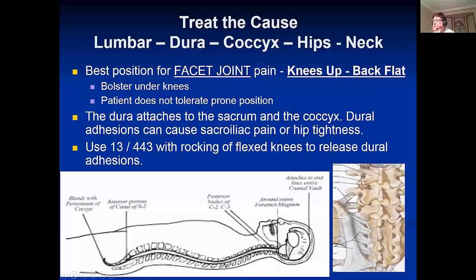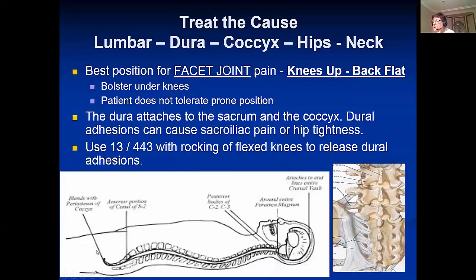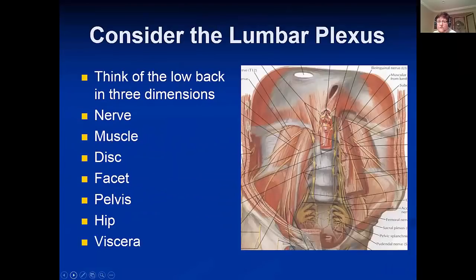Lumbar dura, coccyx, hips, and neck: the dura attaches to the coccyx, goes all the way up the spinal cord to the neck and the base of the skull. If somebody has restricted hip flexion and you think the psoas is tight, we have an ability to treat scarring in the dura — that completely releases the coccyx and sacrum and allows that motion to continue. When treating the lumbar spine: if pain is worse when the patient leans back, walks, or sits, you treat the facet joints. If pain is worse when leaning forward, treat the discs.